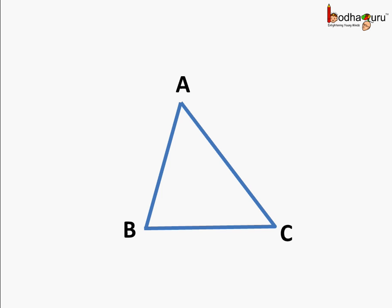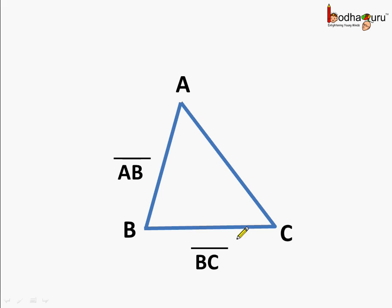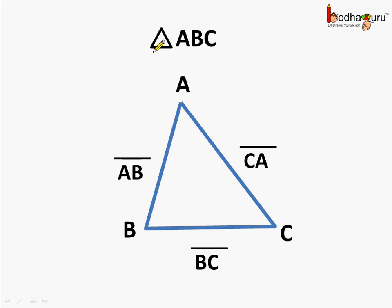And how do we say this is a triangle? We can say this triangle is made by line segments AB, BC, and CA. And how do we represent a triangle? We represent a triangle by this small symbol and we say this is triangle ABC.